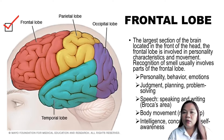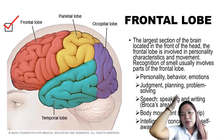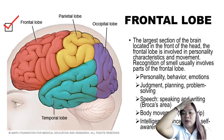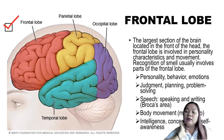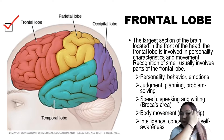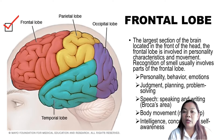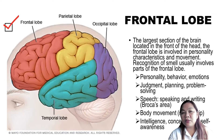The frontal lobe. The frontal lobe is said to be the largest section of the brain, located in the front of the head. The frontal lobe is involved in personality characteristics and movement.